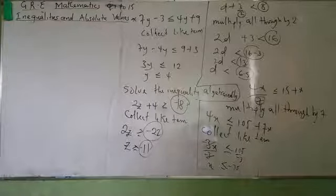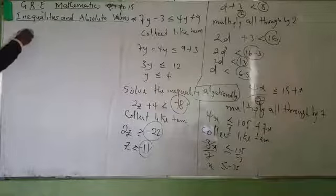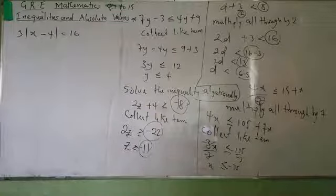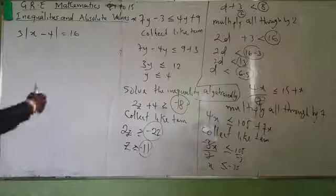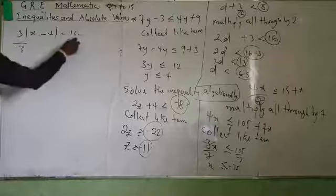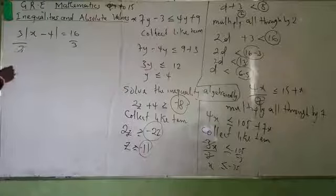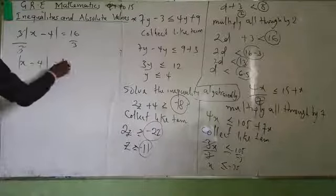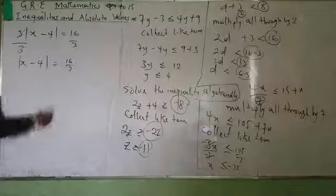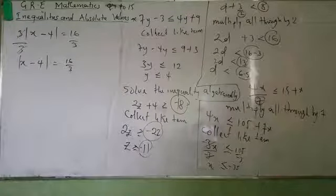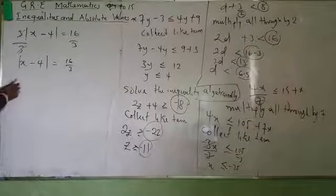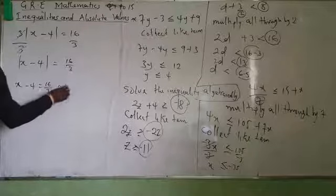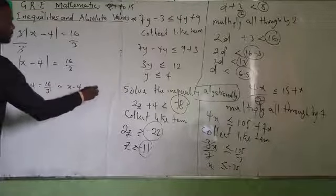Look at this problem: 3 times absolute value of X minus 4, equals 16. What I need to do is divide all through by 3. This cancels, and the absolute value of X minus 4 equals 16 over 3. Now I tackle the absolute value: X minus 4 equals 16 over 3, or X minus 4 equals minus 16 over 3.